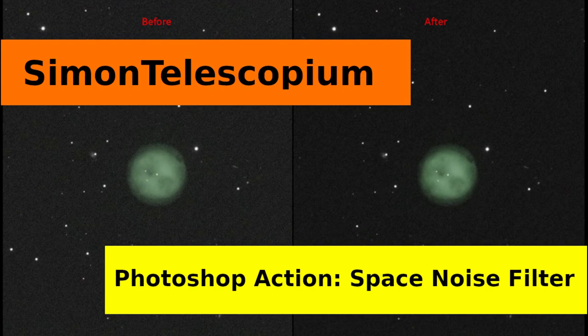This is the process that I use to reduce space noise — by this I mean reduce the noise in the parts of your image that don't contain features such as stars and nebulae. I'll introduce the problem, discuss the components we need to improve our images, and then we'll assemble the components into a process.